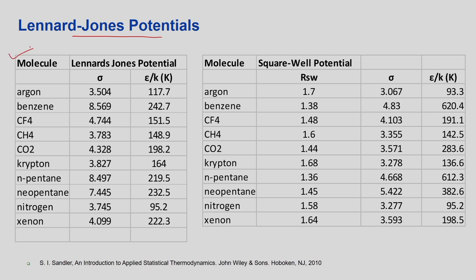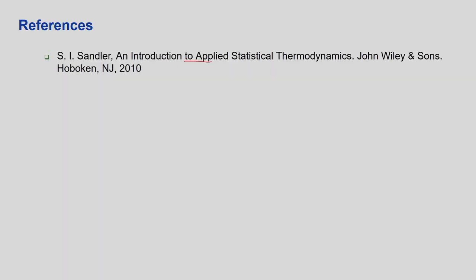The Lennard-Jones parameters and the square well parameters for various molecules are compared side by side. Both have σ (in Ångströms) as the inter-atomic distance where potential equals zero, and ε as the depth of the well, but the square well potential has an additional parameter r_sw. These parameters can be used directly to obtain b2 at any temperature. The lecture corresponds to Chapter 8 of Sandler's book, where inter-atomic potentials are discussed in detail.